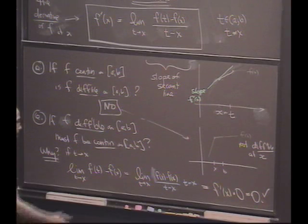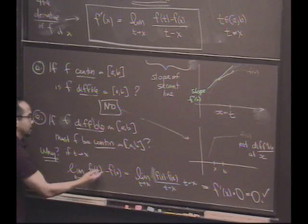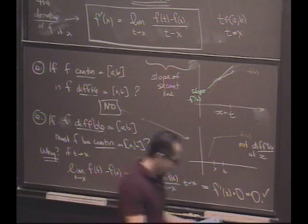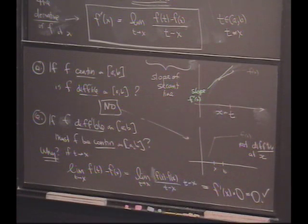So, we've just verified that the limit of f(t) is f(x), which is what it means to be continuous. Okay? Okay. Good. So, differentiable functions are continuous. So, they're actually, I'm a little afraid to see what's under here. Hmm. Ta-da!